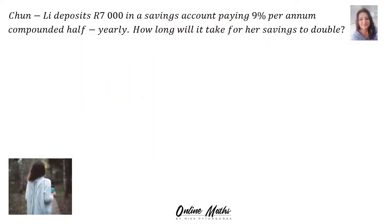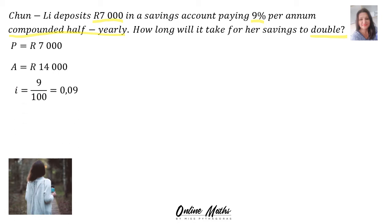Let's do another example. Chun Li deposits 7,000 rand in a savings account paying 9% per annum, compounded half yearly. How long will it take for his savings to double? They didn't specify the final amount — they said the savings doubled. Therefore, P, the principal amount, is 7,000, and 7,000 doubled is 14,000, so A, the final amount, is 14,000. I is 9 over 100, which is 0.09. And N is what we are looking for.